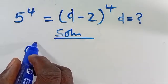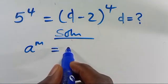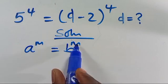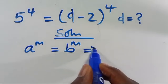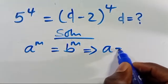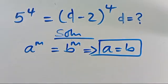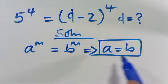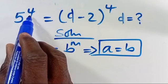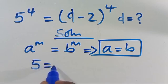Recall that when we have A to the power of M equals B to the power of M, so far they have the same power, this implies that A equals B. So far they have the same power, meaning we equate the bases.